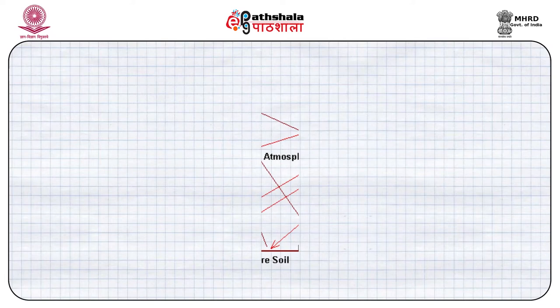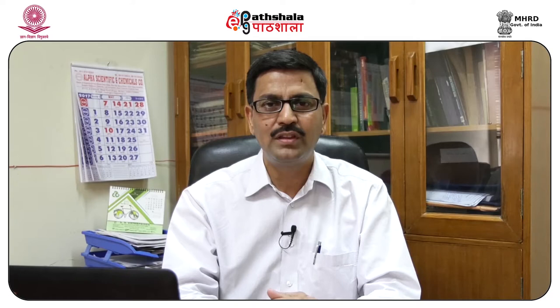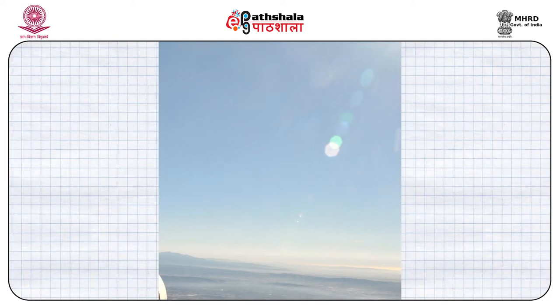When I say the physics of remote sensing, that covers entirely the energy that is being used and captured by the different objects which are there on the surface of the earth. The learning objective of this basic physics of remote sensing covers emittance, radiation, existence, physics of Kirchhoff's law, Stefan-Boltzmann's constant, and different other laws. Precisely, it uses the sun's energy.